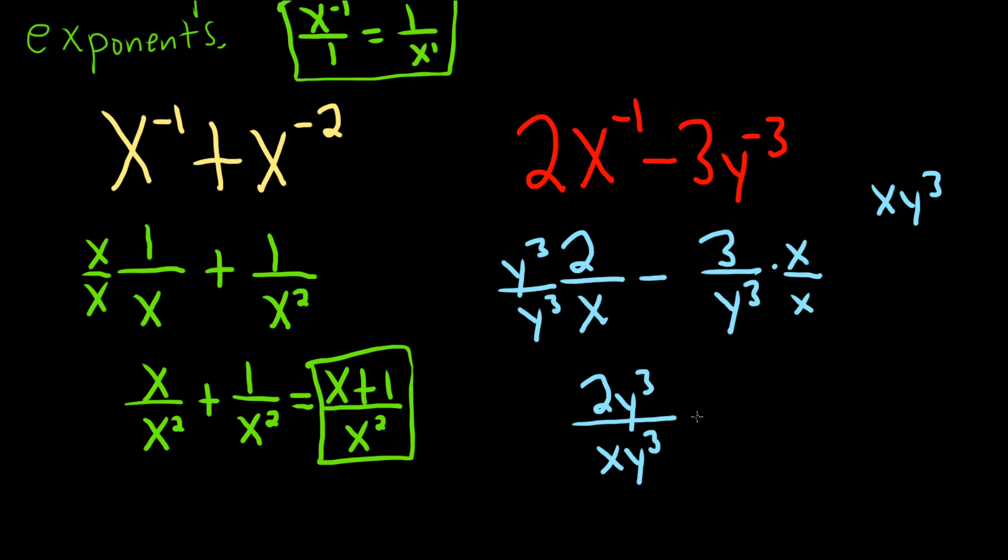minus 3x over xy cubed. And now we can perform a subtraction, so this is equal to 2y cubed minus 3x over xy cubed.